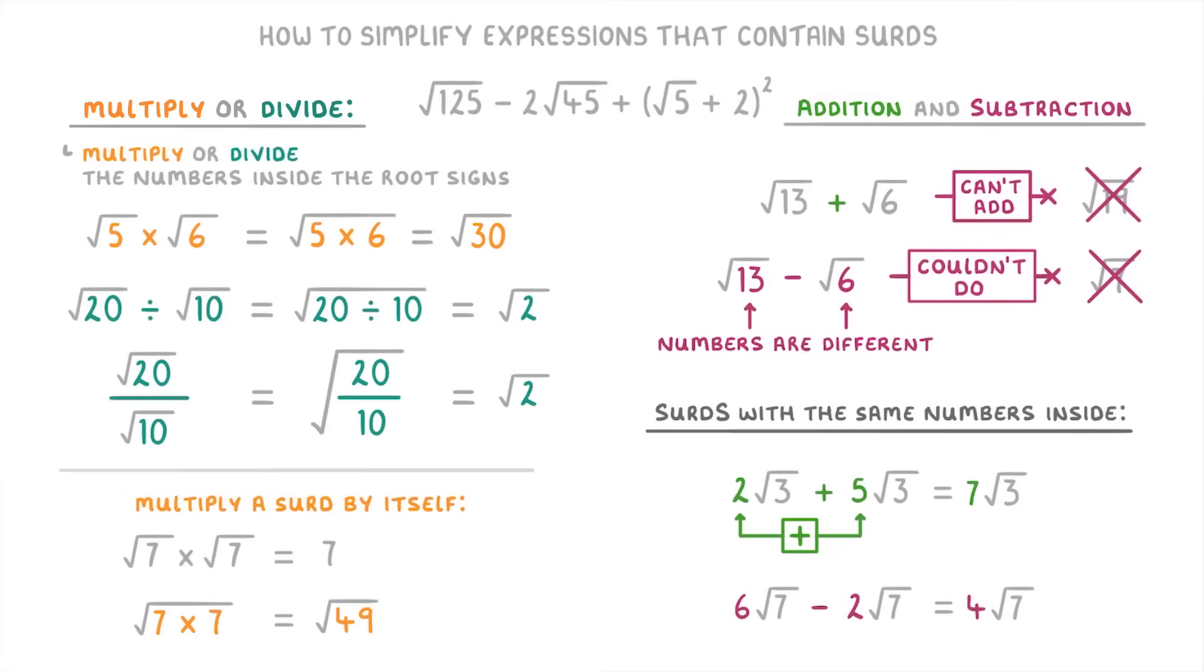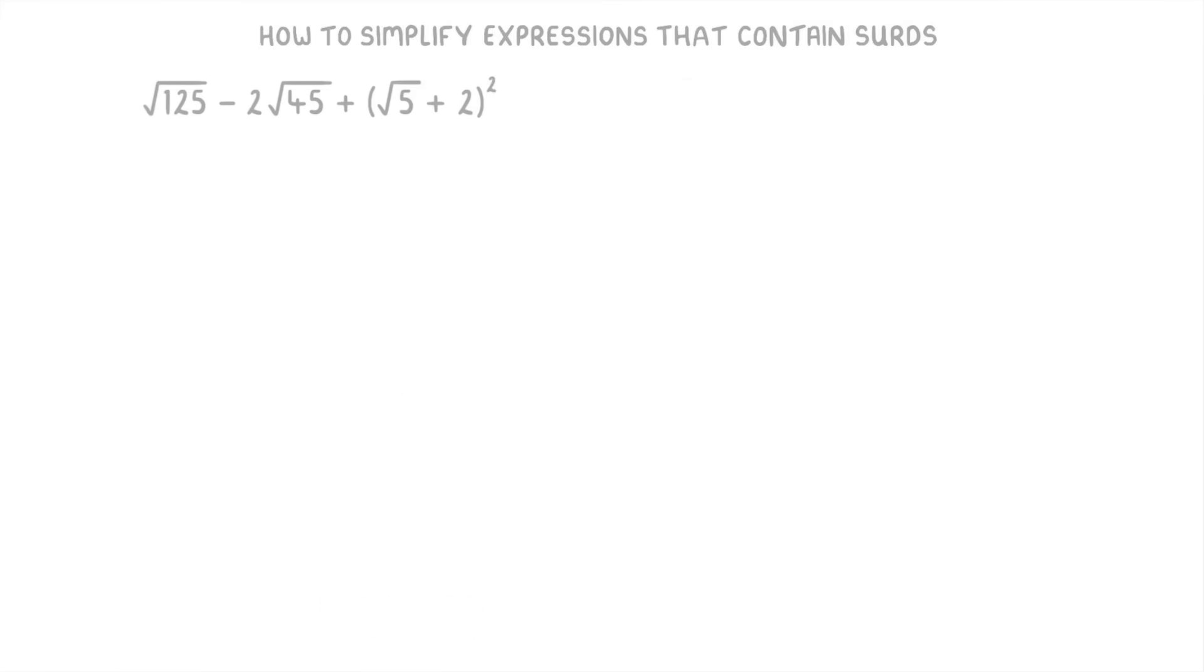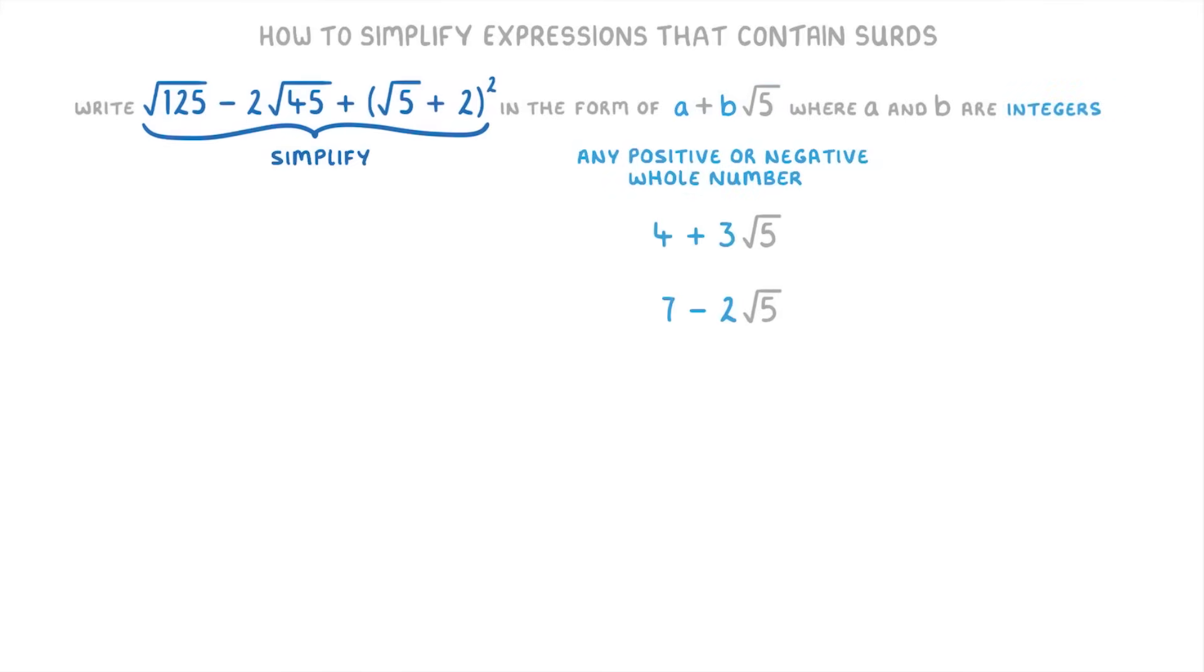So if we go back to our original expression, how would we simplify something like this? Well, in a real exam they'll normally add some words to the question like 'write all of this in the form of a plus b√5 where a and b are integers'. All this means is that we have to simplify the expression until it looks like this, so it might be something like 4 plus 3√5, or 7 minus 2√5. Basically, a and b can be any positive or negative whole number.